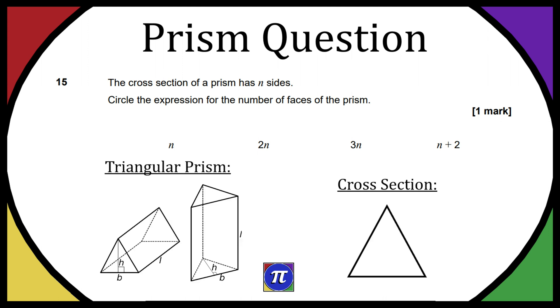I chose a triangular prism for this question. The cross-section is a triangle, so it has three sides. According to the first part of the question, the cross-section of a prism has n sides. In our case, n is going to be equal to 3 because we have three sides.